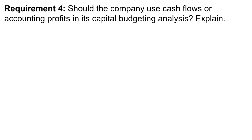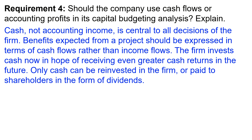Requirement four: should the company use cash flows or accounting profits in its capital budgeting analysis? The answer is cash flows. Cash, not accounting income, is central to all decisions of the firm. Benefits expected from a project should be expressed in terms of cash flows rather than income flows. The firm invests cash now in hope of receiving greater cash returns in the future. Only cash can be reinvested in the firm or paid to shareholders as dividends.